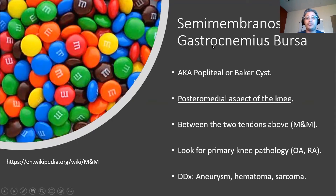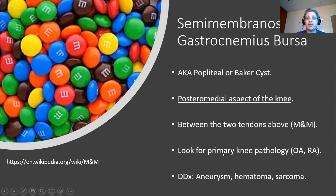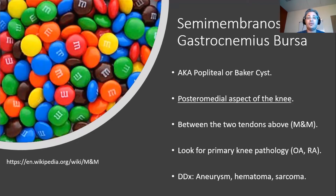So bakers make M&Ms — we're looking for a cyst or inflamed bursa tracking between the semimembranosus and the medial head of the gastrocnemius in the posteromedial aspect of the knee. This bursa can be primarily inflamed due to involvement by a primary synovial pathologic process like rheumatoid arthritis or gout, but more commonly a Baker cyst is due to primary knee pathology.